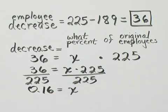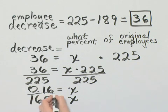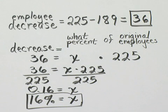Now we want this as a percent. How do you write this as a percent? Then you move the decimal point two places to the right and attach a percent symbol. So two places to the right, that is 16%. So the decrease here is 16%.